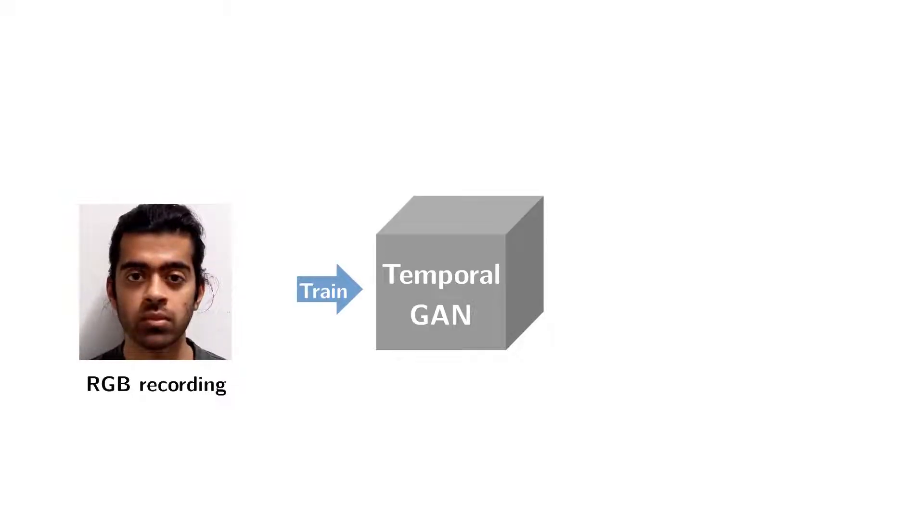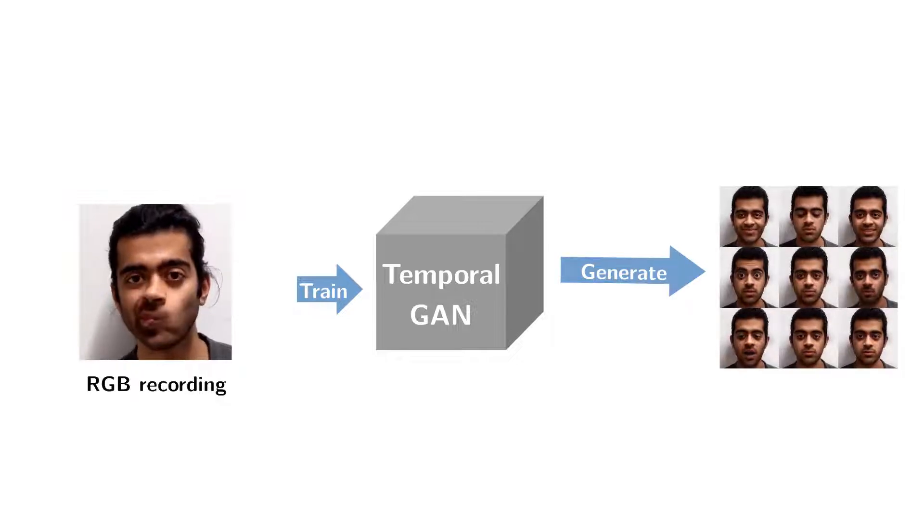We want to train a temporal GAN which should learn the characteristic motion performed in this video and be able to generate new, unseen, plausible videos that look like the training video. In addition, we want these generated videos to be of high resolution and arbitrary duration.